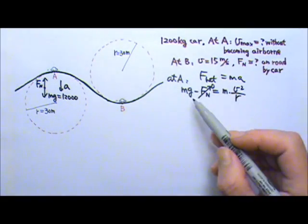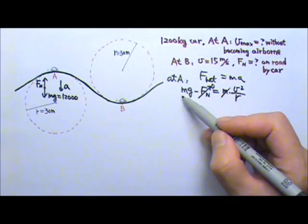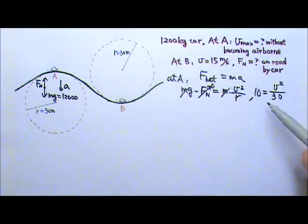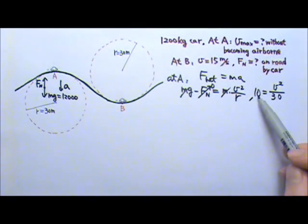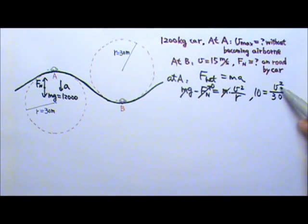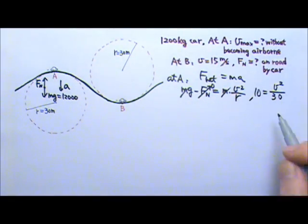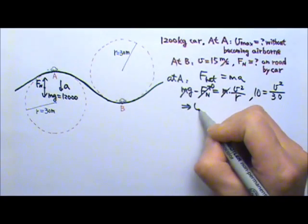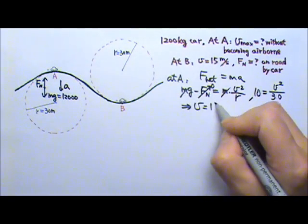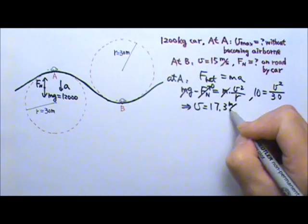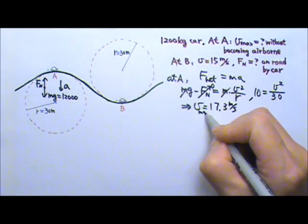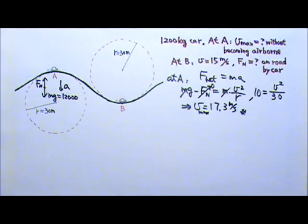If that's zero, that means that we can cancel the mass. So I'm using 10 for g and that equals to V squared over the radius, 30. So this will give us the velocity is 17.3 meters per second. And that's the maximum speed without becoming airborne.